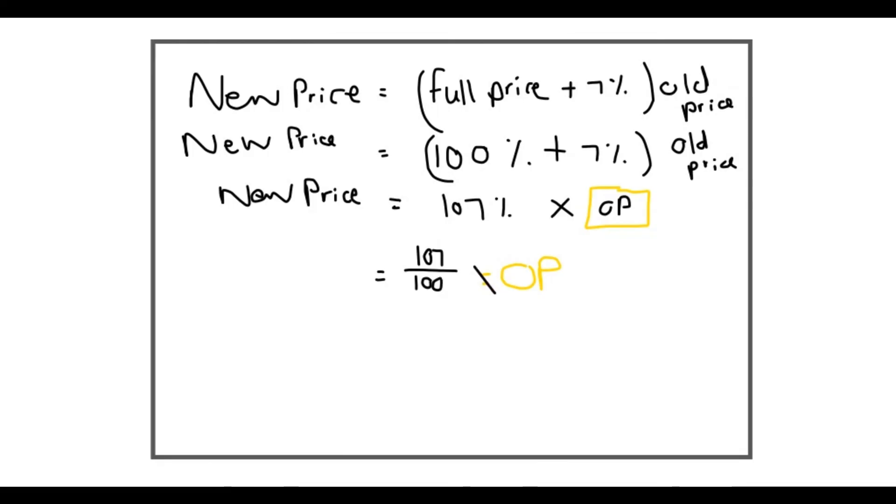In this case then we took 107 and we put it over 100 because it's a percentage, we have the times there, and in this side we have new price. If I want the original price I want to isolate that, get it alone on one side. Then I flip this fraction so it becomes 100 at the top and 107 at the bottom, and then times the new price. So this is basically how we get this formula of the original price.